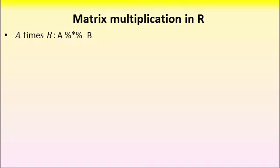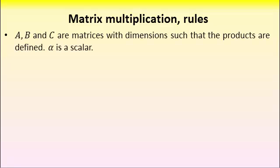Finally we have a bunch of algebraic rules for matrix multiplication. In this slide A, B and C are matrices with dimensions such that the products discussed below are allowed. And alpha is a scalar.